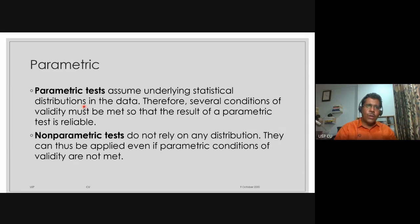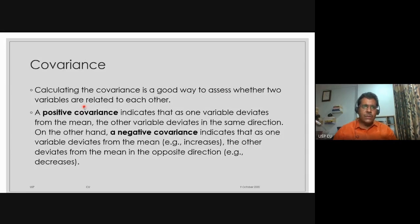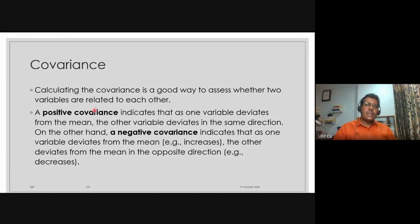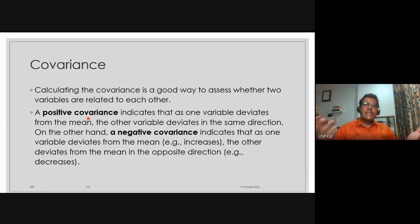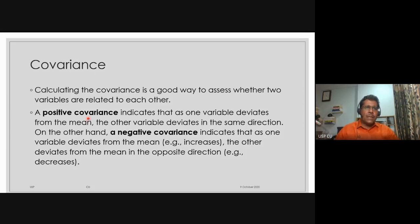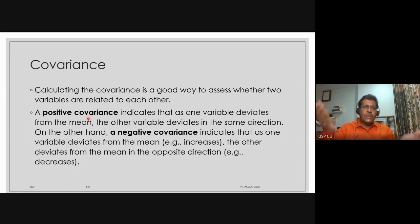Now we're going to talk about the most important point: correlation and covariance. Covariance, as the word suggests, indicates that as one variable deviates from the mean, the other variable also deviates from the mean. Covariance is a good way to assess the association between two variables. For example, I might calculate the time spent watching Netflix and the marks you get in examinations to find some kind of association, which can be positive or negative.